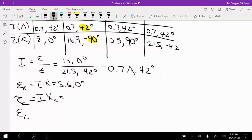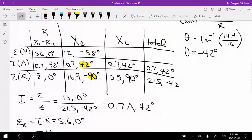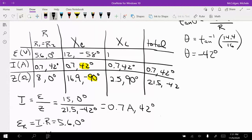For EL, I'm going to have I times XL. And that's going to be 1.8. So just multiply 0.7 times 2.5. And now I'm adding the angles. So I'm going to have 132 degrees.